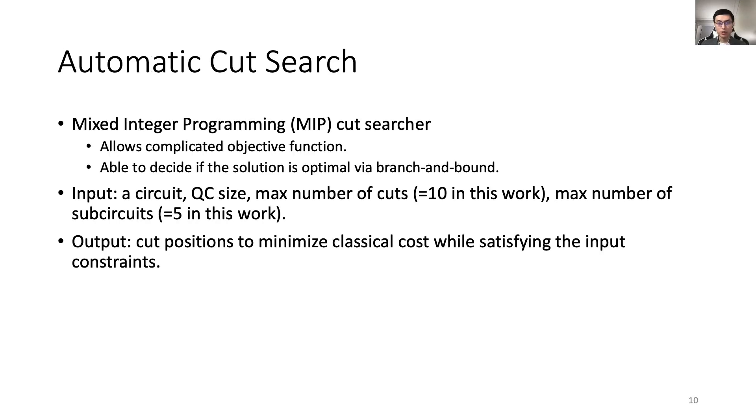Just now we were assuming a manual selection of cut points. General quantum circuits are impossible to eyeball the efficient cuts. MIP solvers allow us to design complicated optimization objective functions and is able to decide whether the cut points found are indeed optimal. The inputs to the MIP solver include a circuit, the size of the quantum computer available, max number of cuts, which is set to 10 in this work, and the maximum number of sub-circuits, which is set to 5 in this work. The output is the optimal set of cut points satisfying the input constraints.